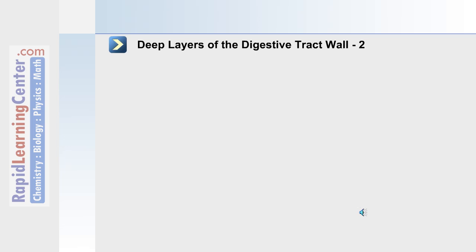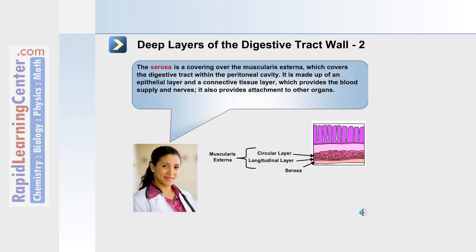The fourth layer of the digestive tract wall is the serosa, a covering over the muscularis externa. It is made up of an epithelial layer and a connective tissue layer, and this layer provides the blood supply and nerves.